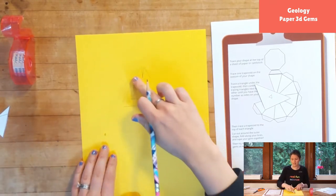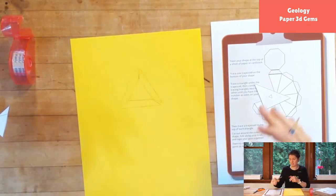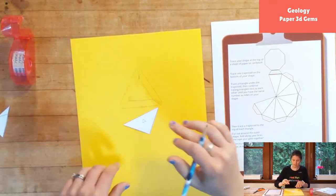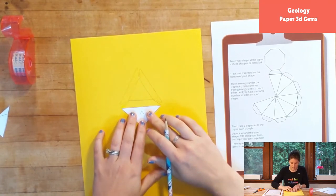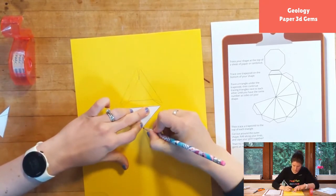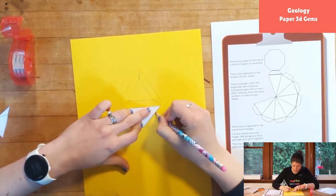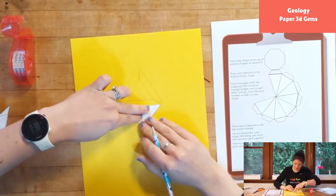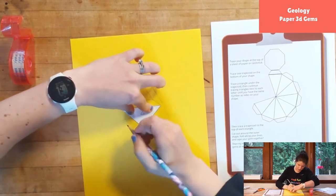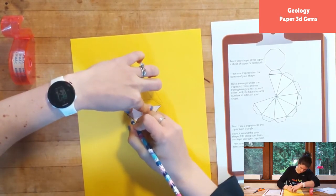All right, so now I have these pieces which are going to make up the side parts of the gem, and I'll take my triangle which is going to make that base of my gem. I'll show you another way actually.